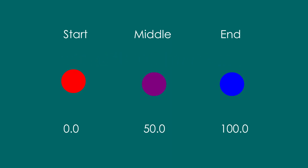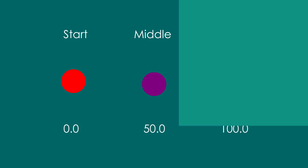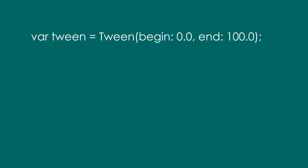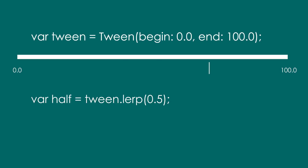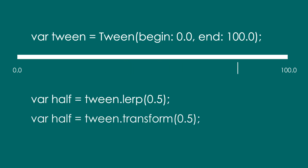A tween allows us to do this. Set the start and end states, say 0 and 100, and we can get intermediary values calculated linearly using the lerp or transform function at any progress.